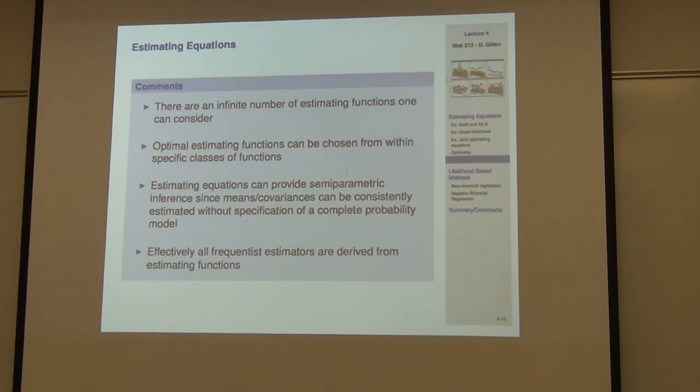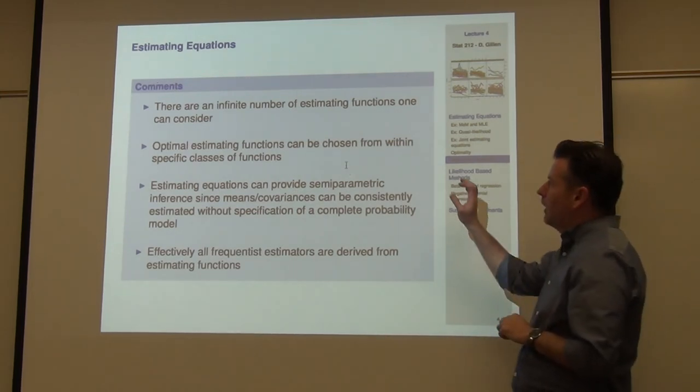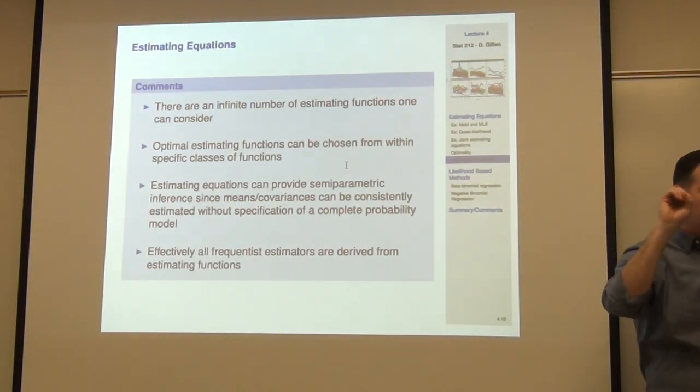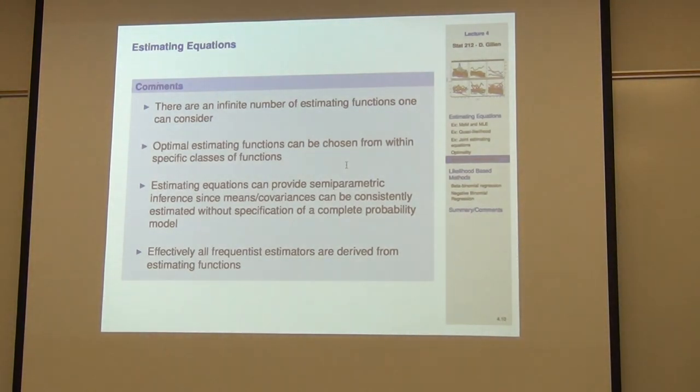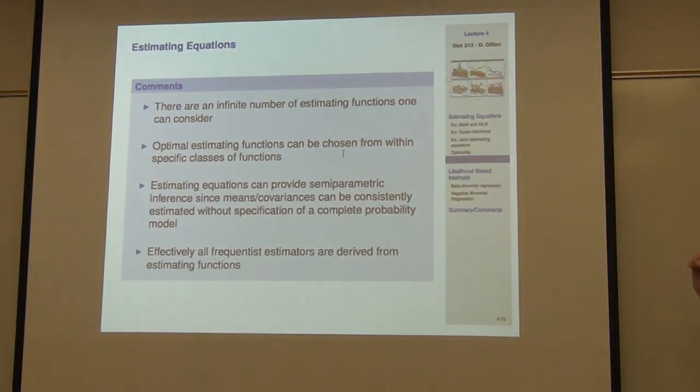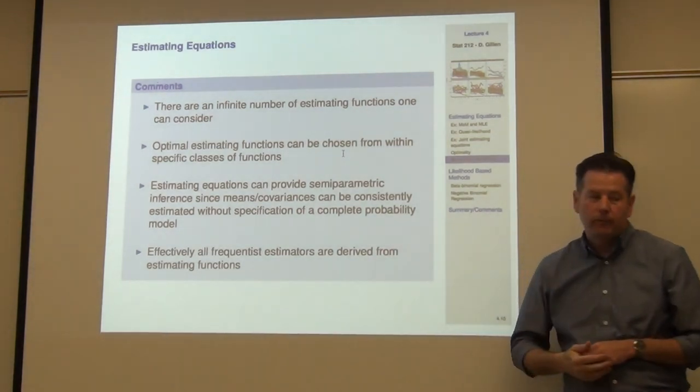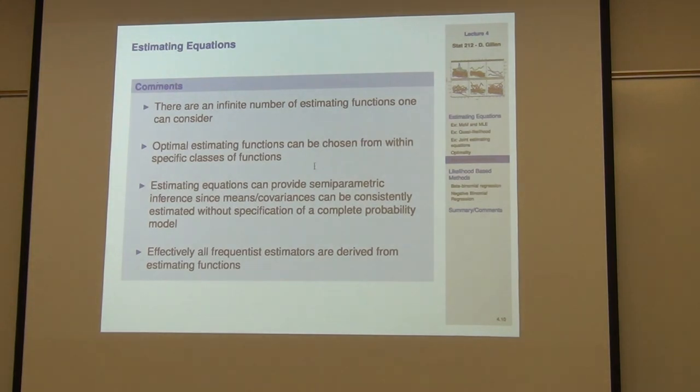So again, if you think about it, just some comments on this. You've got an infinite number of estimating functions and estimating equations ultimately when you set them equal to some constant that you can choose from. So as you're thinking about them, what you want to think about is, what are the optimal estimating functions that you might consider? And what I've been talking about for you guys are what most people have considered a class of semi-parametric models. Again, when we think about this, we consider them semi-parametric. You're parametrizing the mean and specifying the relationship with the second moment. So you've got μ and you've got V, but then you're not specifying anything about the third, fourth, fifth, sixth moment.